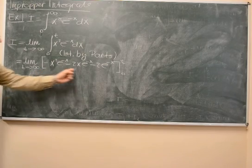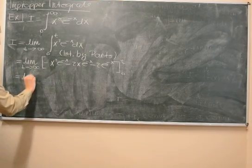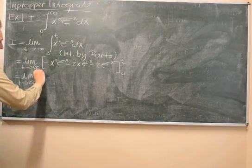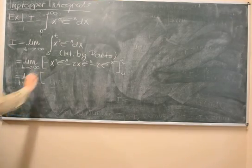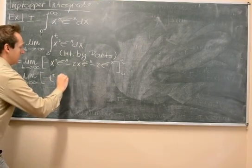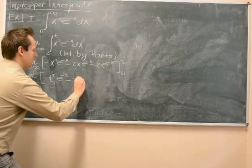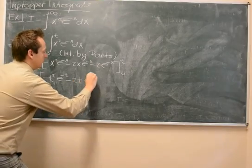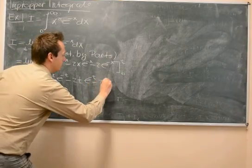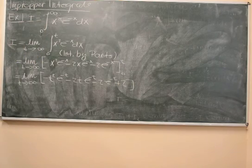Now we've found the antiderivative, so we just substitute in the bounds. What we get is: minus t squared e to the minus t, minus 2t e to the minus t, minus 2 e to the minus t, plus 2.